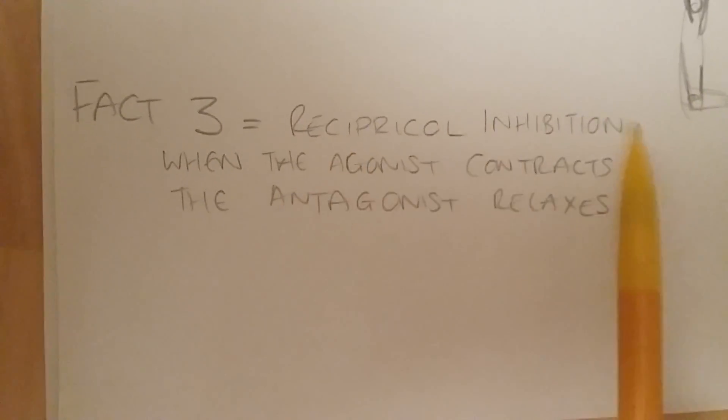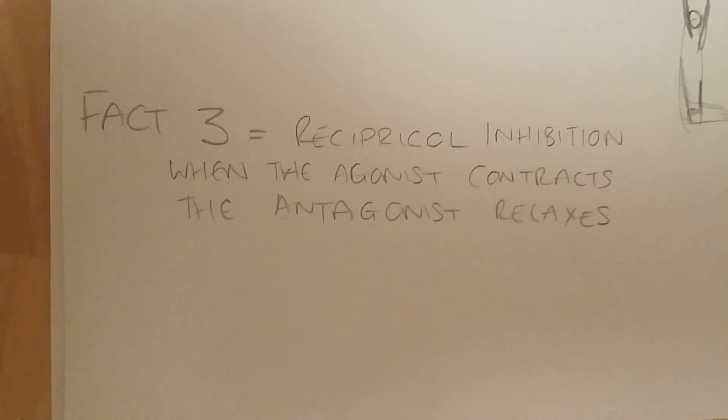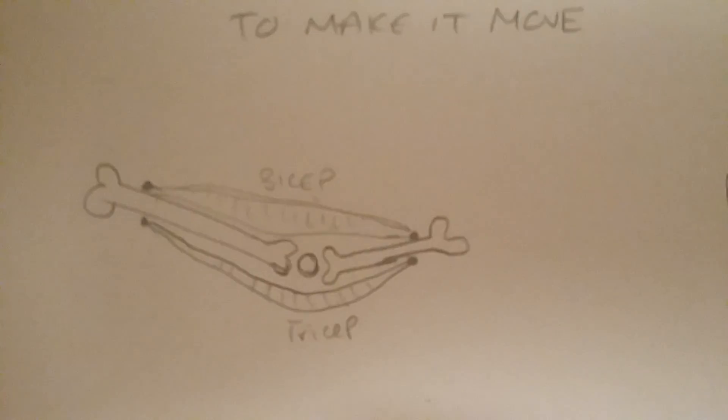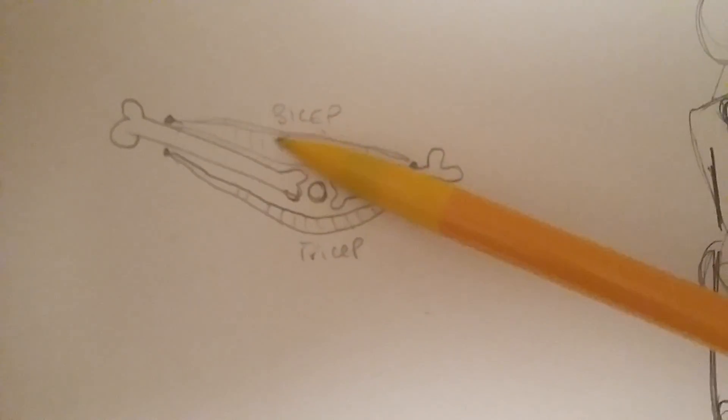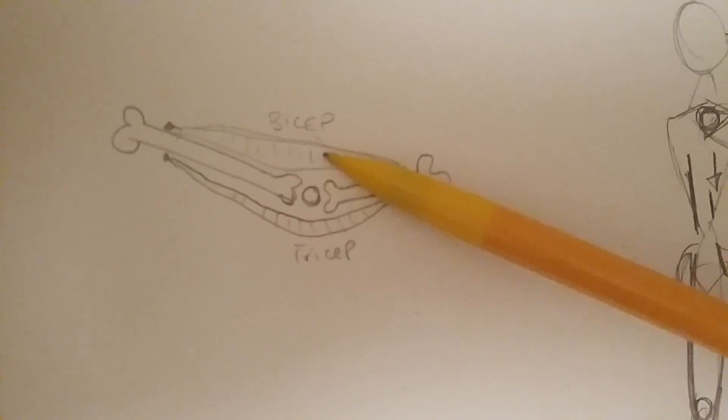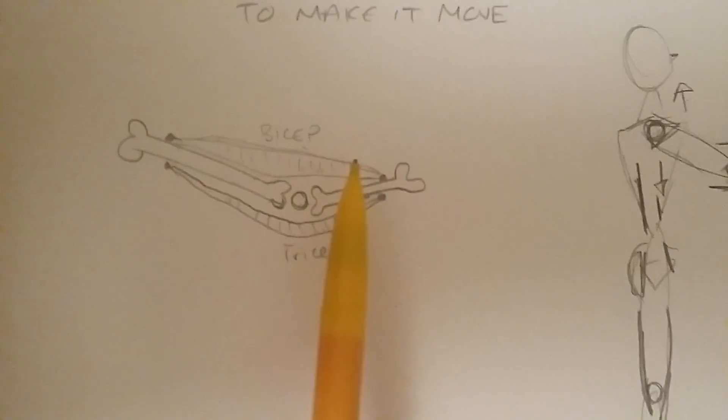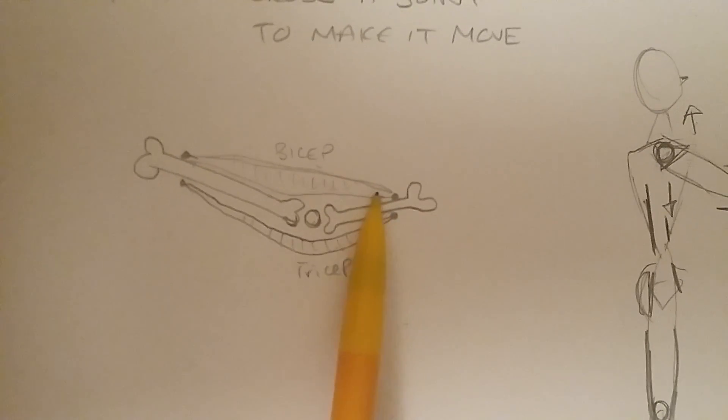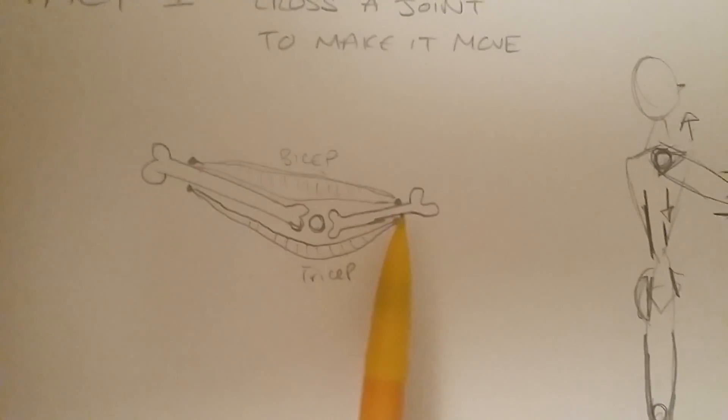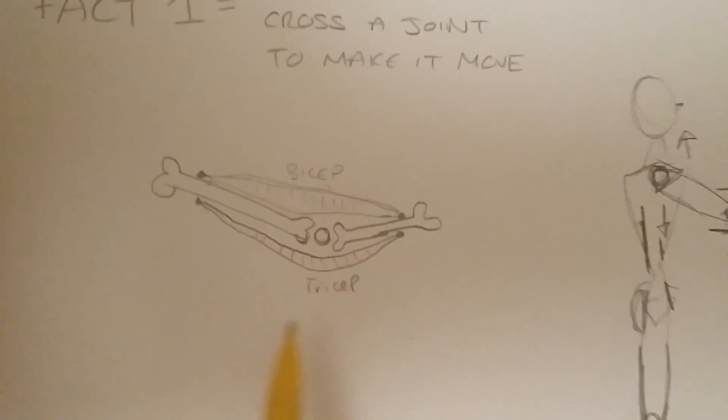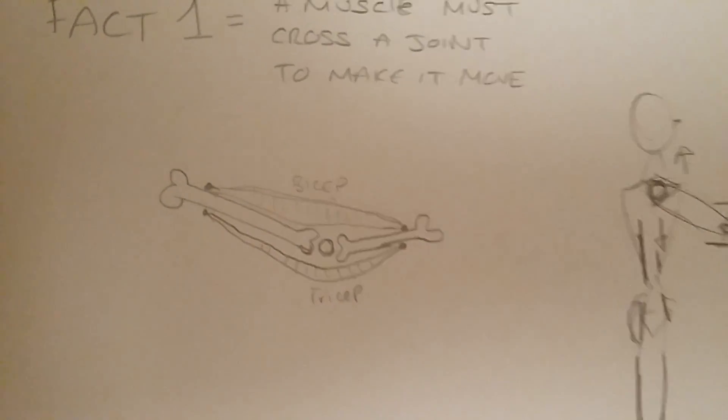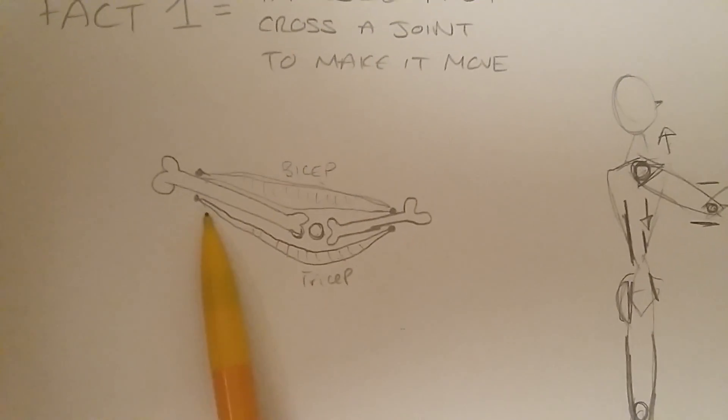So this is when, if we go back to our bicep-tricep, if this agonist contracts, imagine this bicep, you're doing a bicep curl and the bicep contracts so it gets a little bit shorter. That brings this insertion closer to the origin. So you actually are closing this gap here so your elbow moves. Now in order for that to happen, this tricep has to relax.